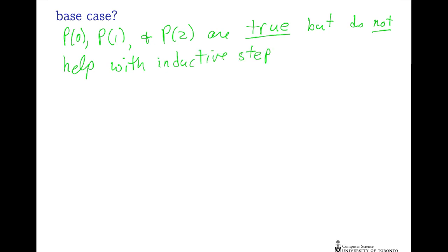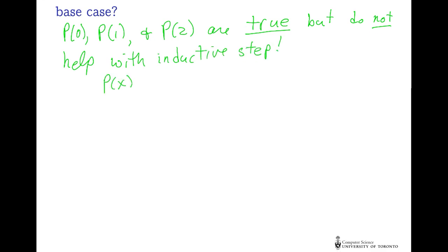What about base cases? Well, P(0), P(1), and P(2) are actually true, but they don't help in the inductive step. Remember that P(x) is actually false when x is strictly between 2.5 and 3. So there's some kind of gap in the logic that we need to take into account.